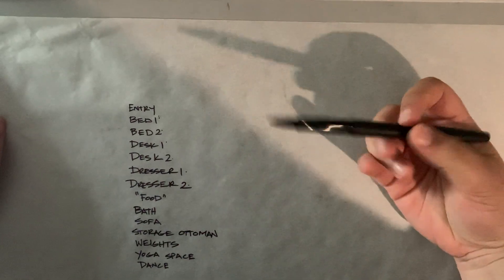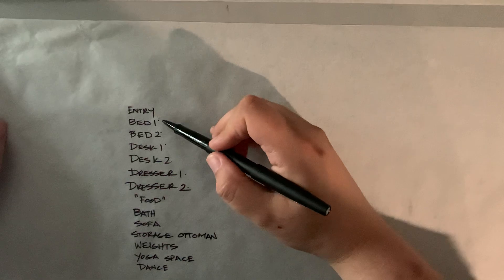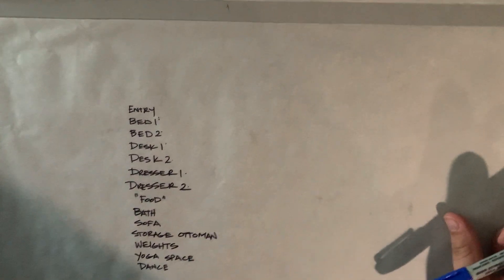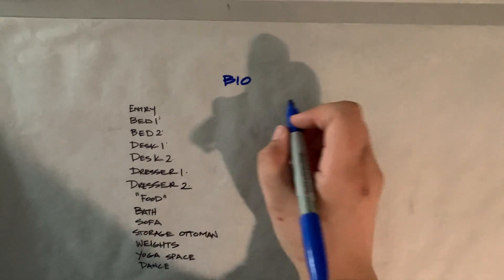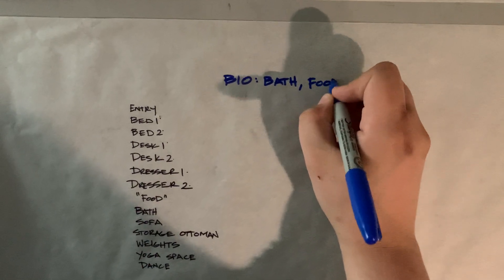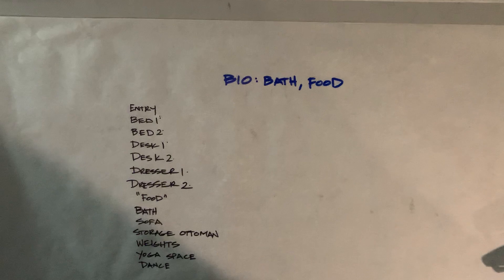Now I'm going to think about what all of these really are and use different colors. I always use the word 'bio' for anything that involves our biological needs — that's the bathroom and food. When you say you need a bio break, it usually means go to the bathroom, get some water, take care of your hunger. Bio is a really good way of saying all of that.